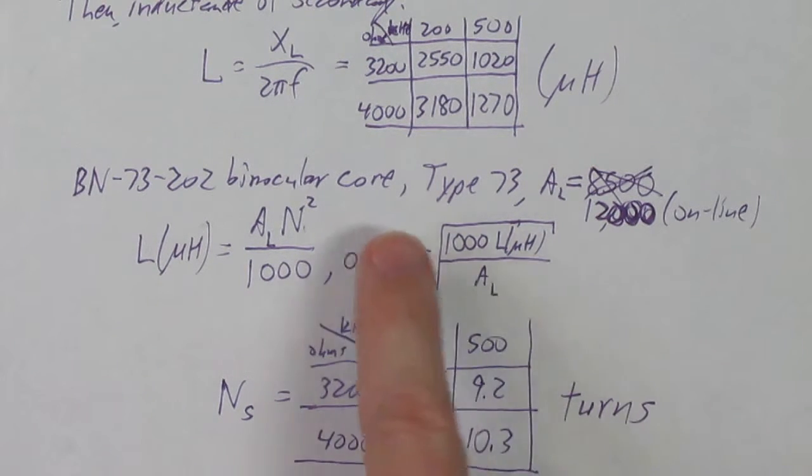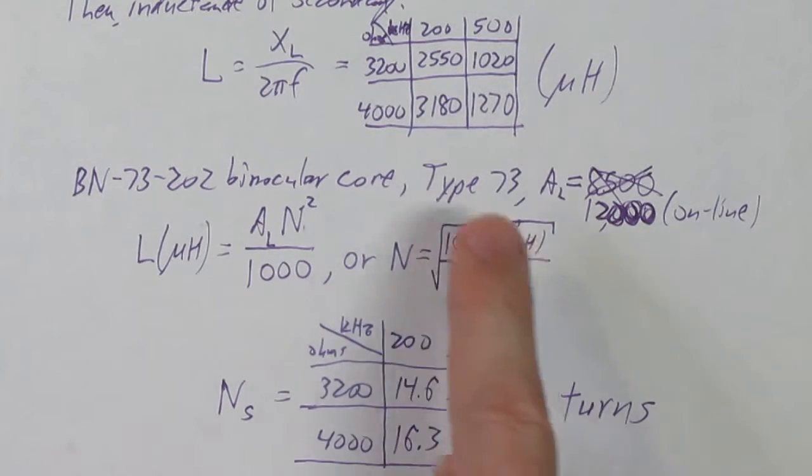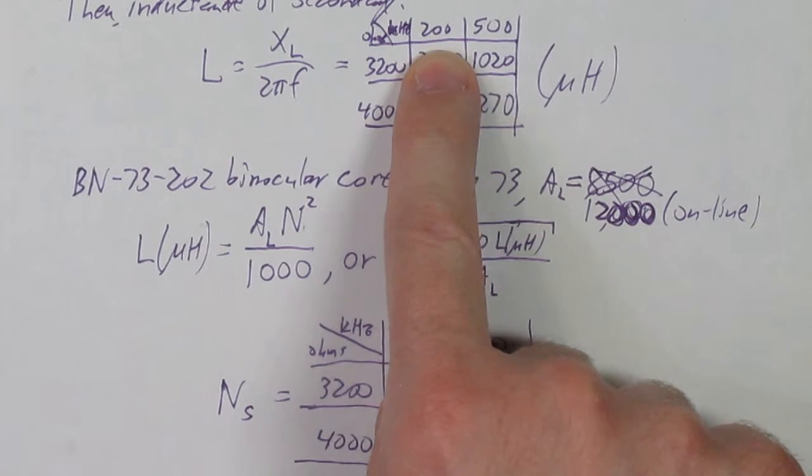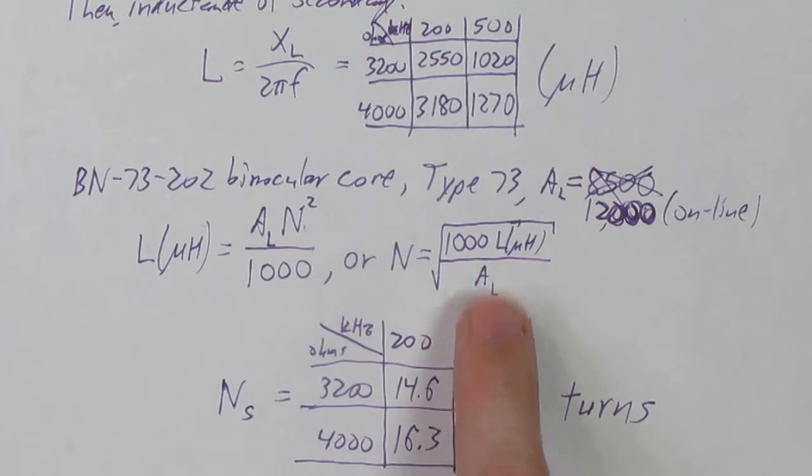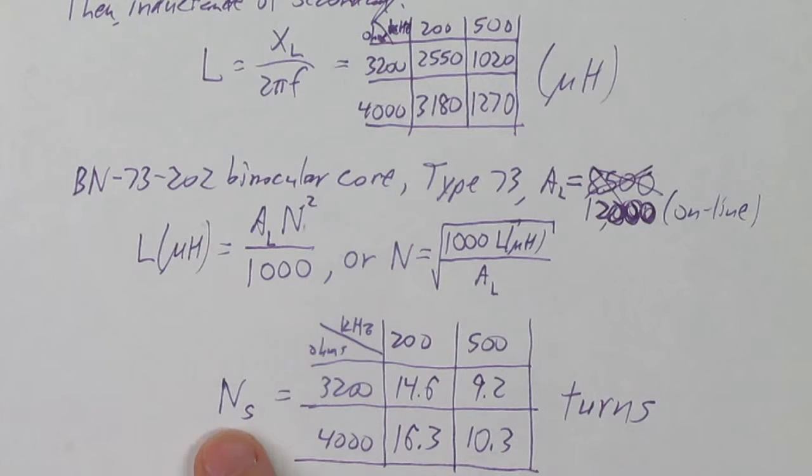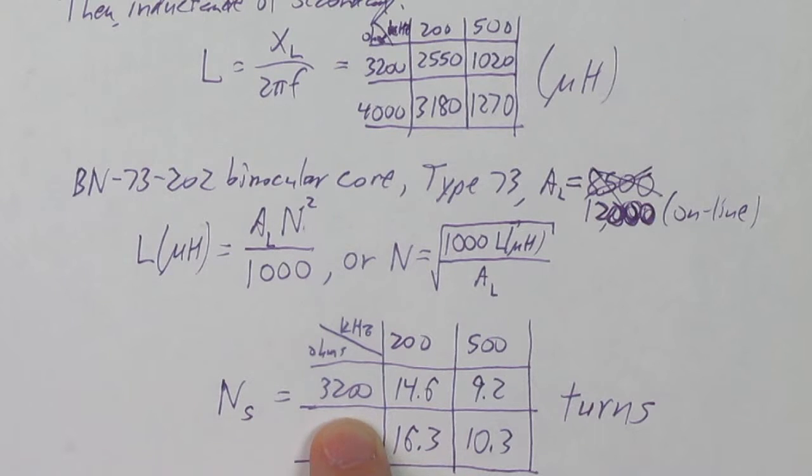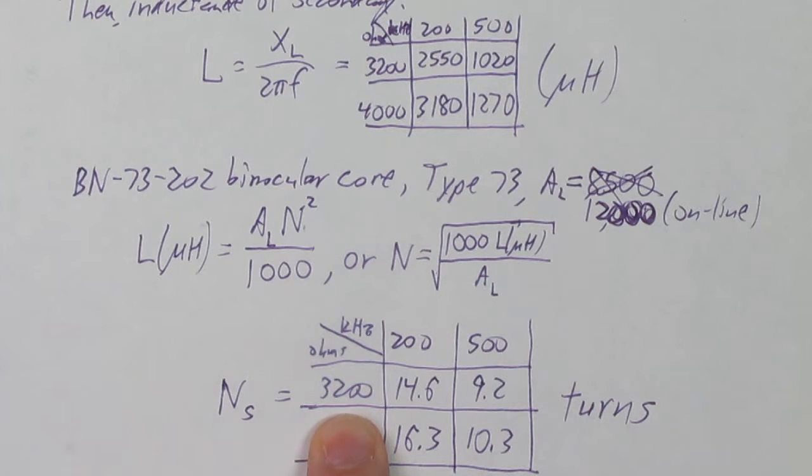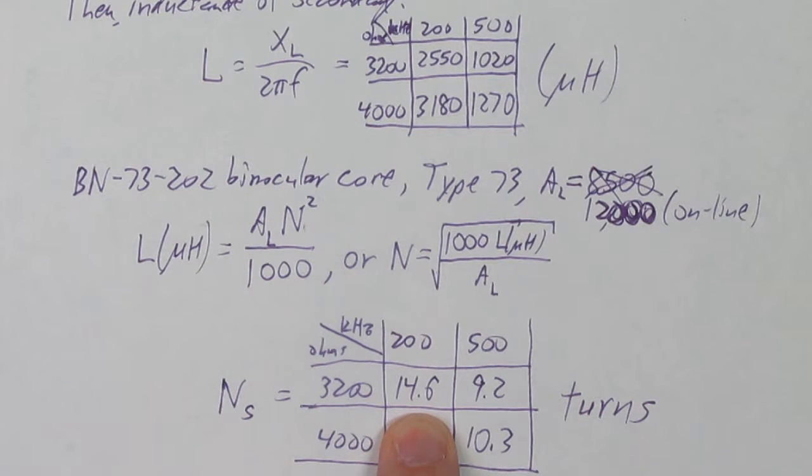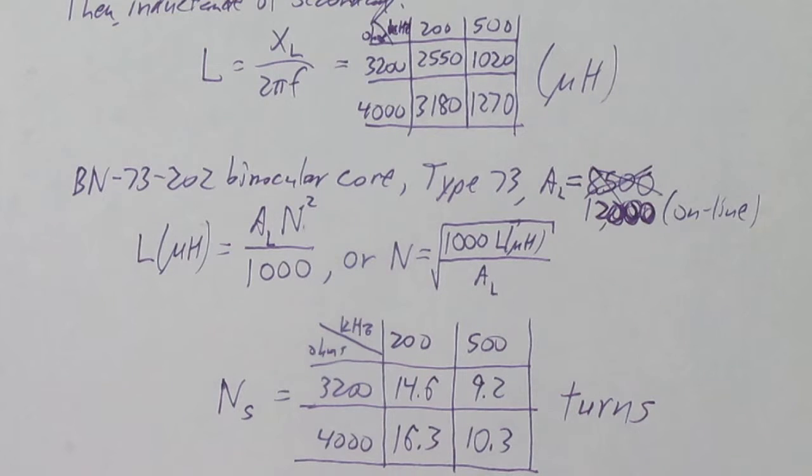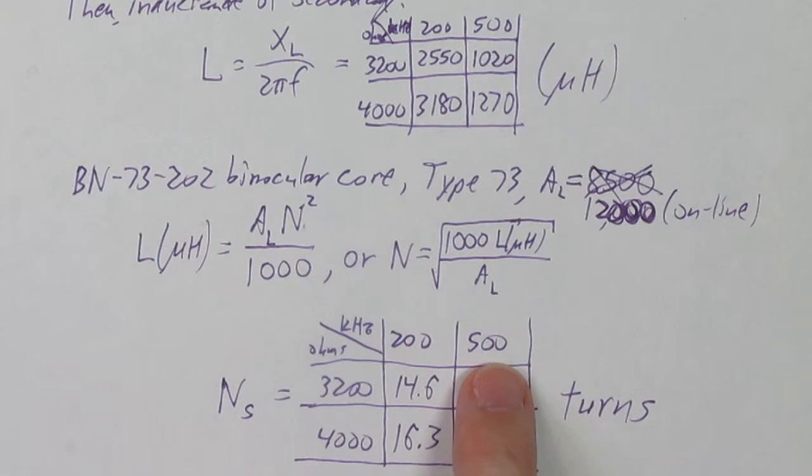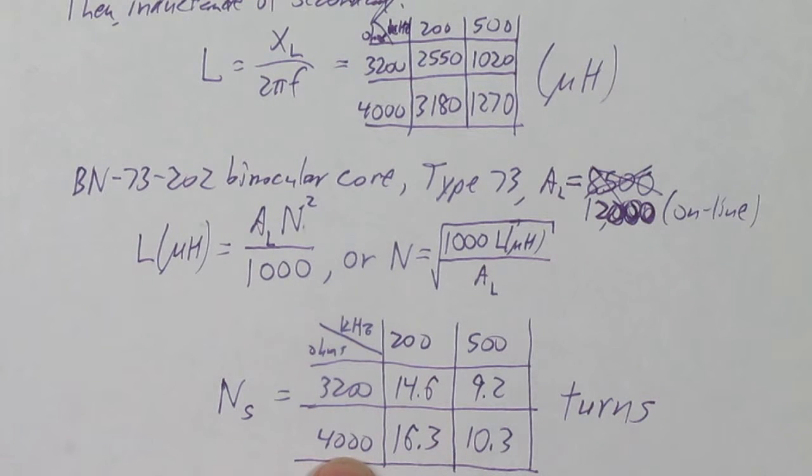So to get this inductance that we need so that we can get coverage down to 200 or 500 kilohertz, there's our equation. We plug in those inductance values, and this is what we get, the number of turns for the secondary coil, which is the one that has the larger number of turns. So if we're talking about 800 ohms of resistance for the terminating resistor of the antenna, well, we need 3,200 ohms here for the inductive reactance. That means that we would need about 14.6 turns to go down to 200 kilohertz and 9.2 turns if we only needed to get down to 500. And if we go up to the 1,000 ohm terminating resistance, the values are about 16 and 10.